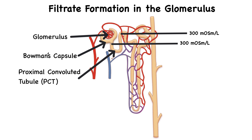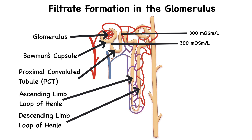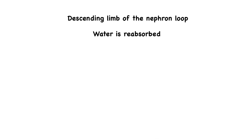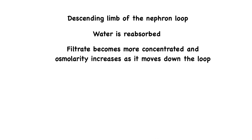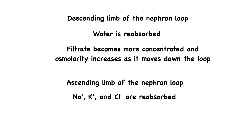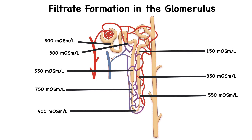Then we move into the nephron loop, where we're going to have selective reabsorption. In the descending limb of the nephron loop, water is reabsorbed due to the permeability of the descending limb of the loop of Henle. This makes the filtrate more concentrated as it moves down the loop, increasing its osmolarity. Then the filtrate moves into the ascending limb of the loop of Henle. Sodium chloride and potassium are actively reabsorbed, but water cannot follow because the ascending limb is impermeable to water. The result is that the filtrate becomes more dilute, decreasing the osmolarity to about 100 milliosmoles per liter by the time it reaches the distal convoluted tubule.